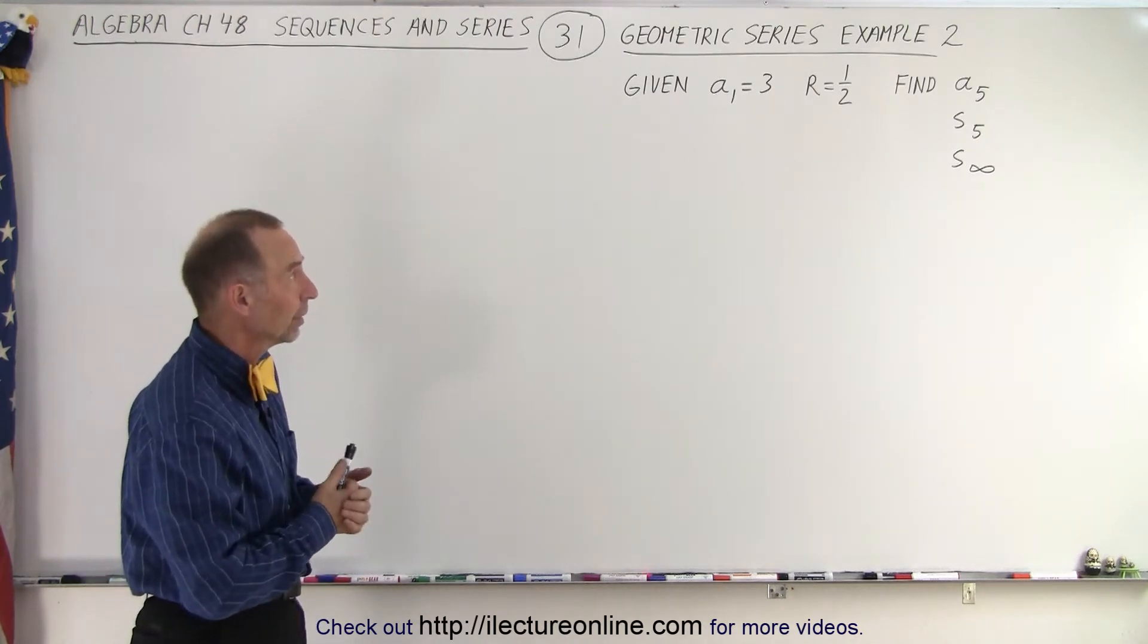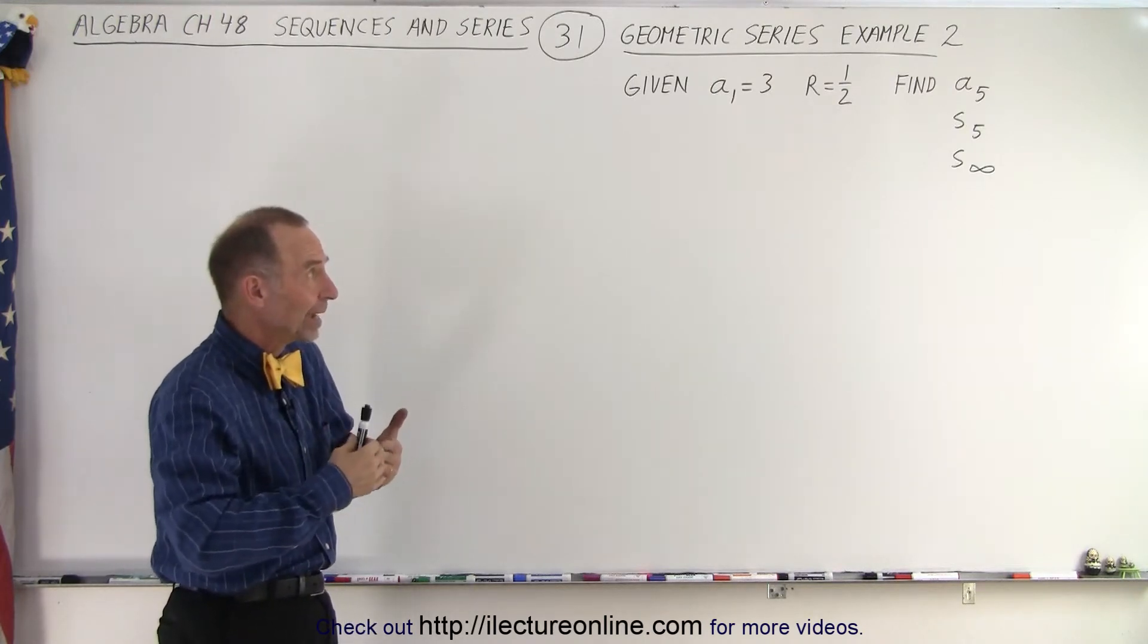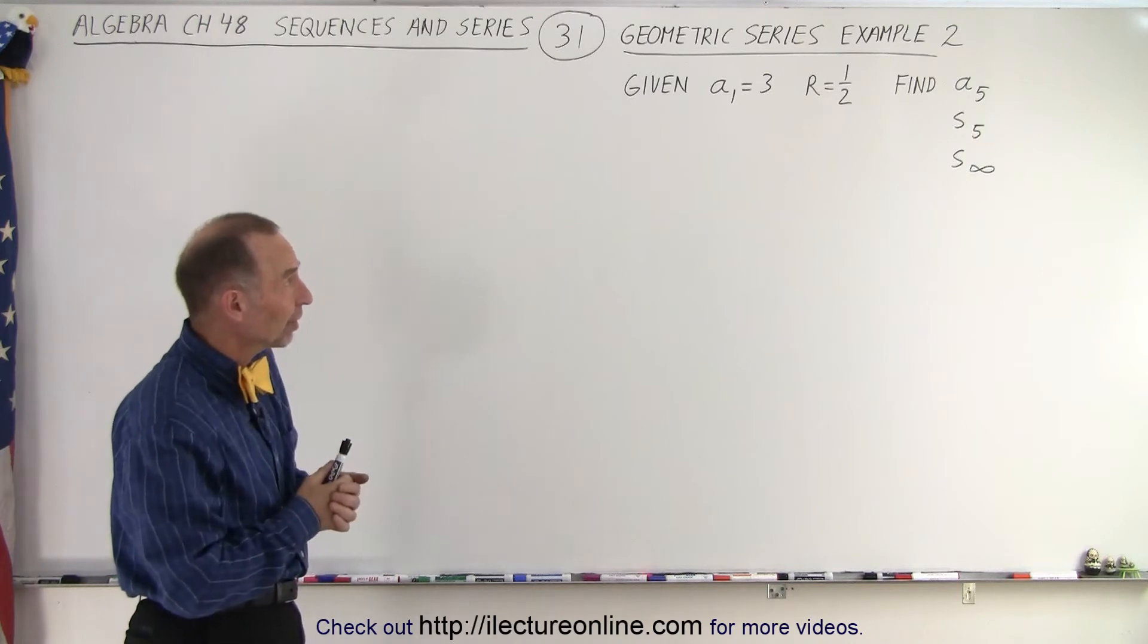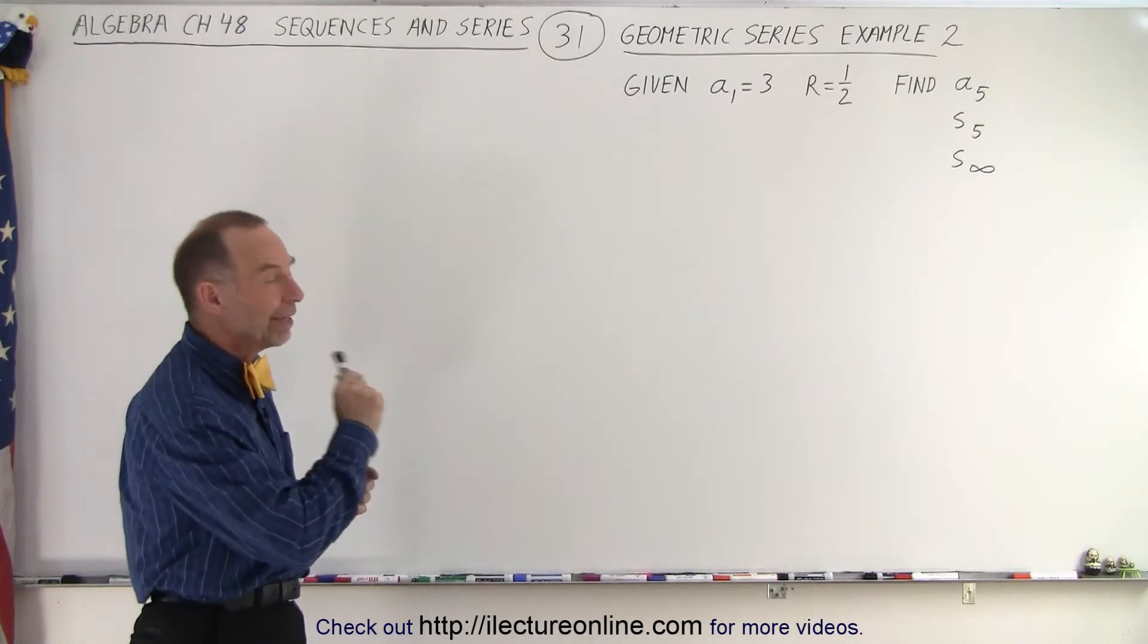The first term is equal to 3. The common ratio is 1 half. And we're supposed to find the fifth term or the fifth number in the series, the partial sum of the first five numbers, and then the infinite sum.